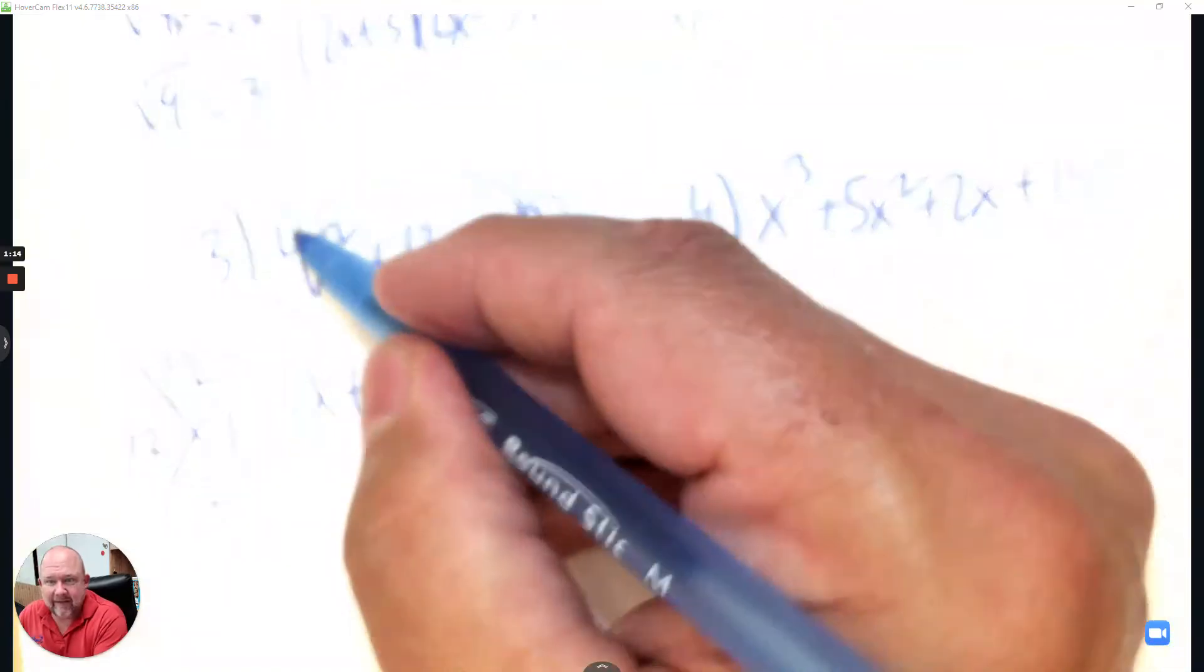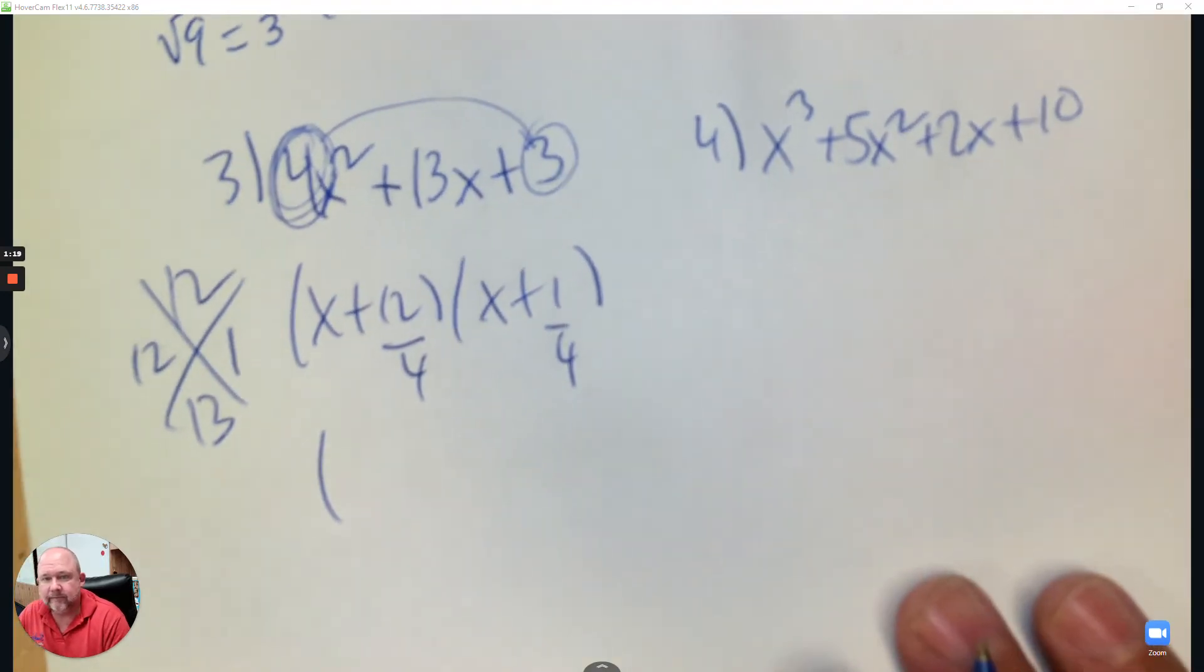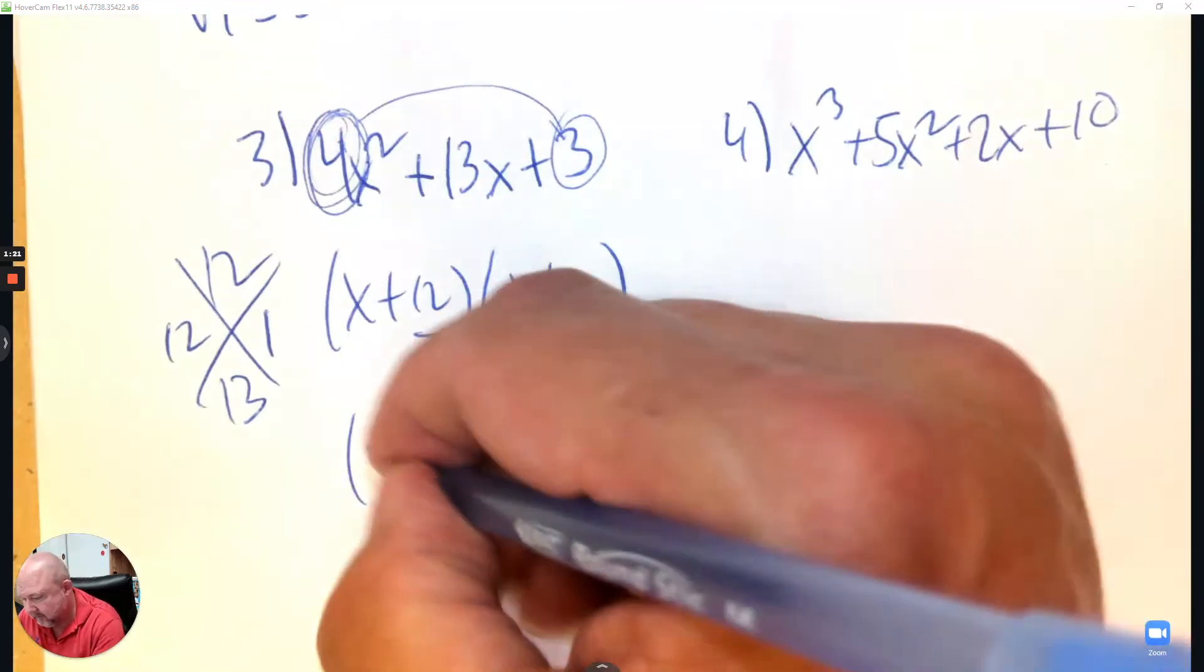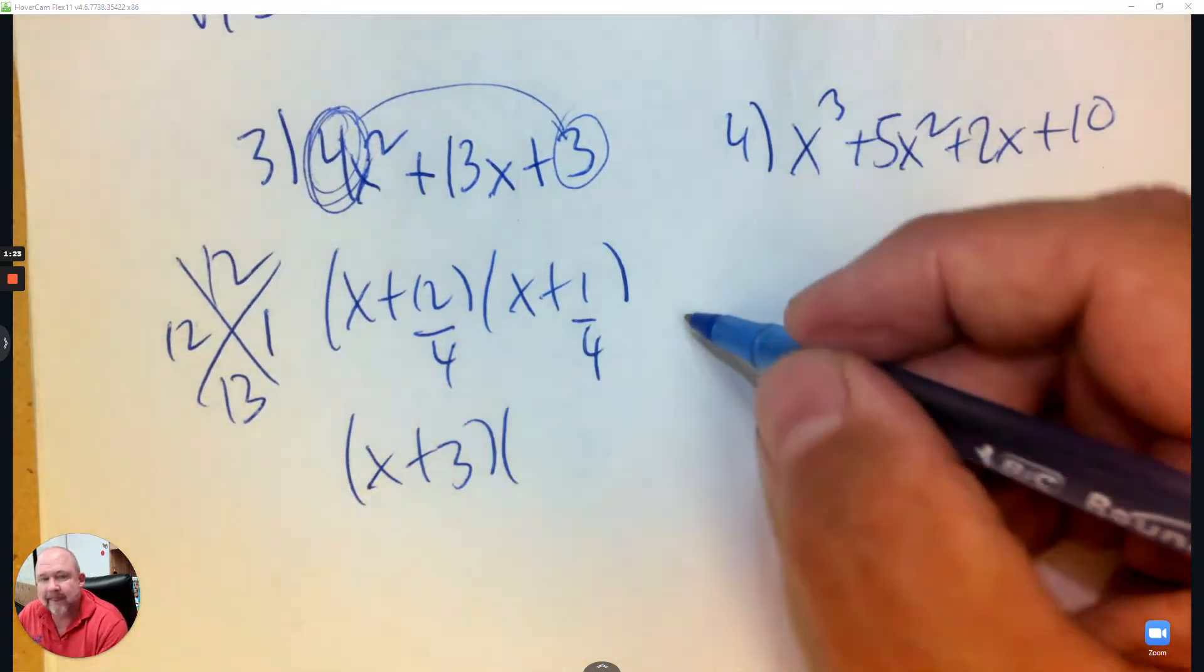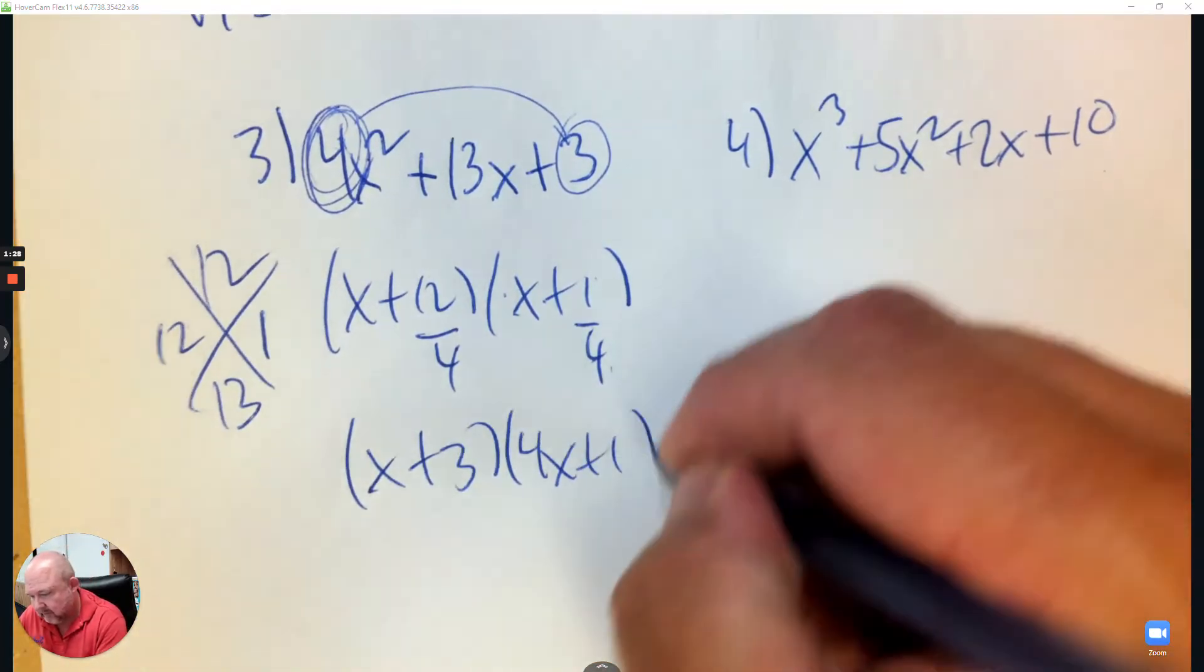And then I take that leading number 4 and divide both numbers by 4. So 12 divided by 4 is 3. 1 over 4 is in lowest terms, so I just slide that 4 in front and it's 4x plus 1.